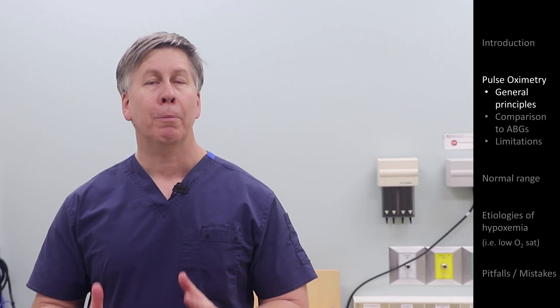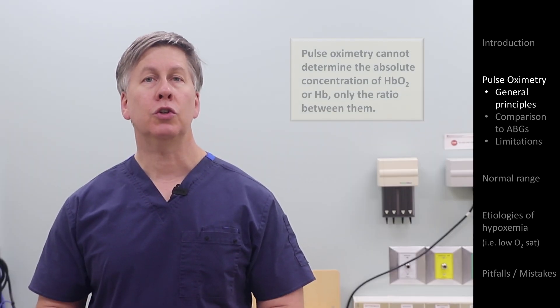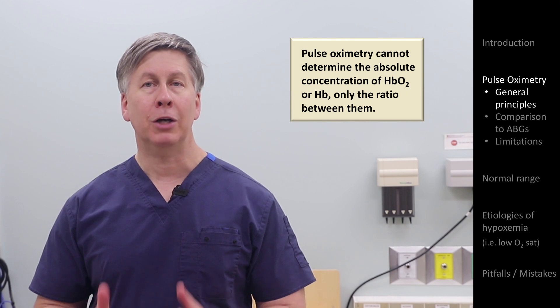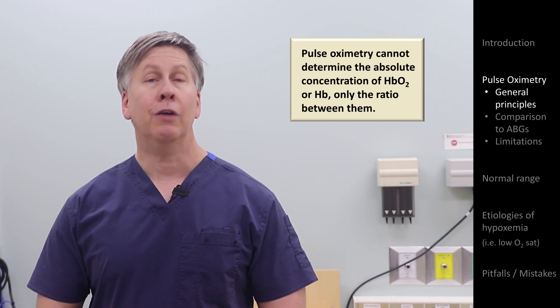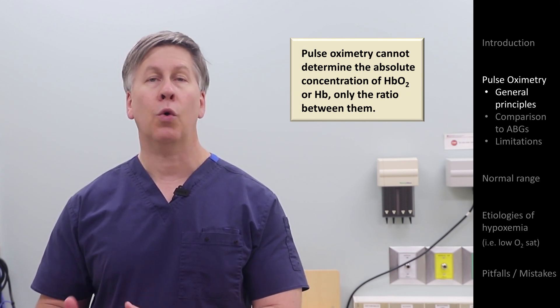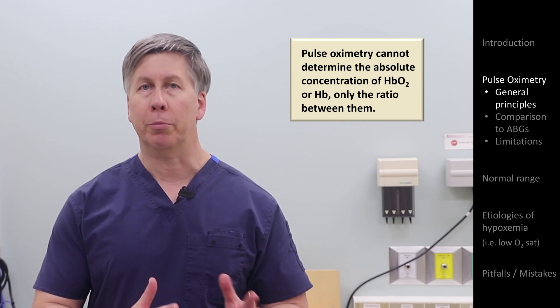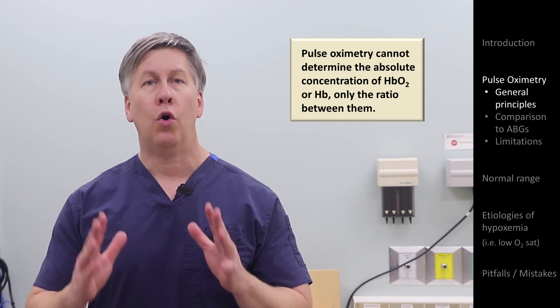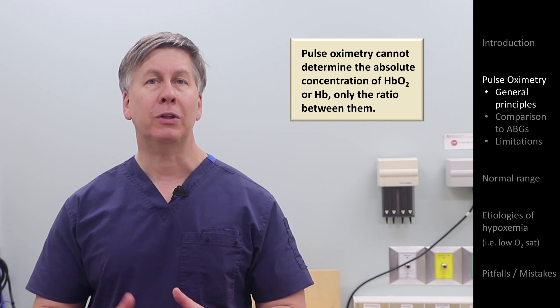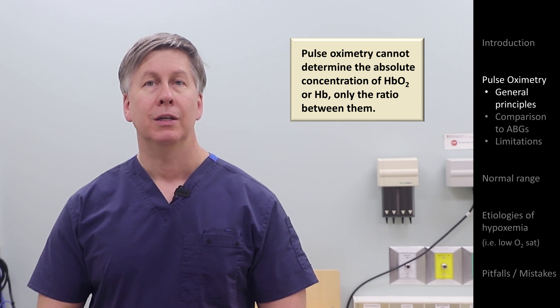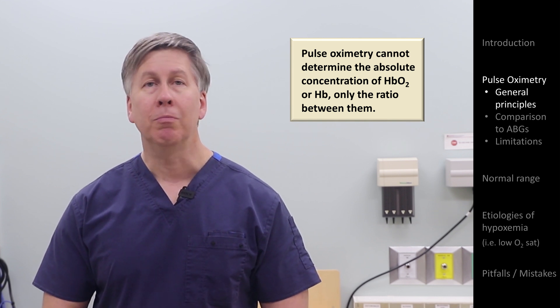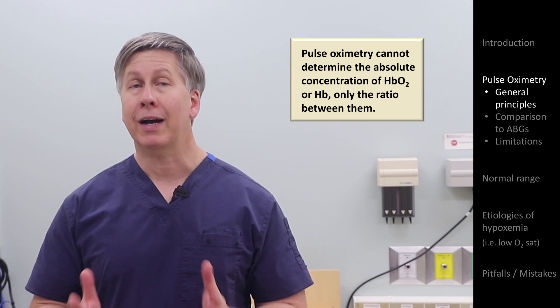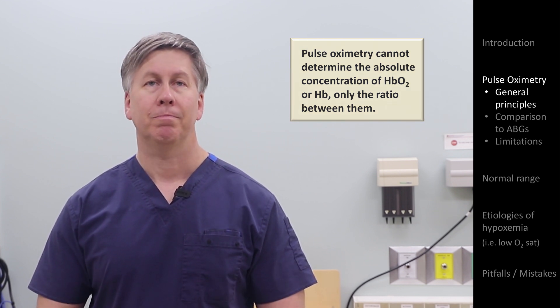Notably, pulse oximeters do not measure the actual concentration of either oxy or deoxyhemoglobin, only the ratio between them. So for example, they cannot be used to detect anemia.